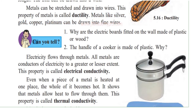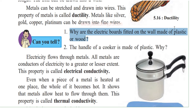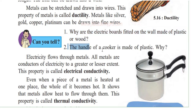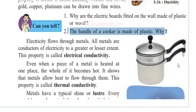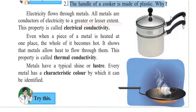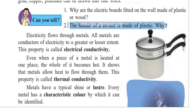Can you tell why the electric boards fitted on a wall are made of plastic or wood? Most nowadays are made of plastic, but earlier they used to be made of wood. Also, the handle of a cooker is made of plastic — why? Most vessels at home have handles made of plastic. Why put plastic? They could have kept the handle as metal.